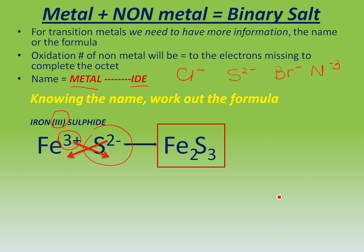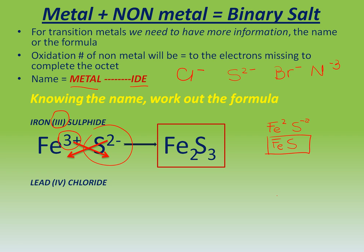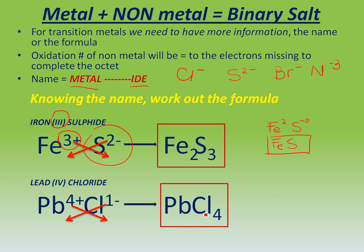Remember that iron also works with oxidation number positive 2. So for iron 2 sulfide, we have iron positive 2 and sulfur negative 2. If we cross them out, the 2s can be simplified, giving us FeS. For lead 4 chloride, the lead is acting with positive 4 and chlorine gains 1 electron to form chloride negative 1. We cross the numbers and obtain the formula PbCl₄.